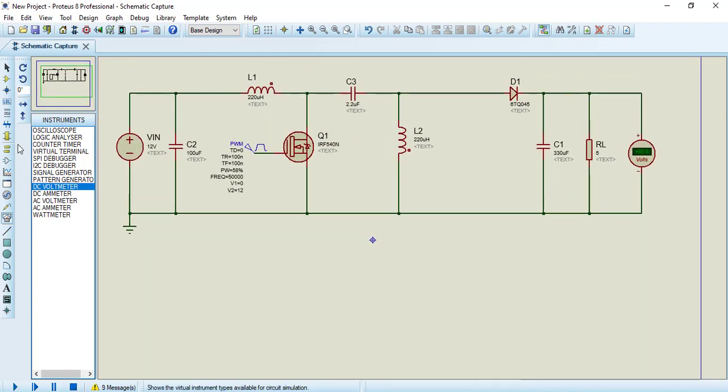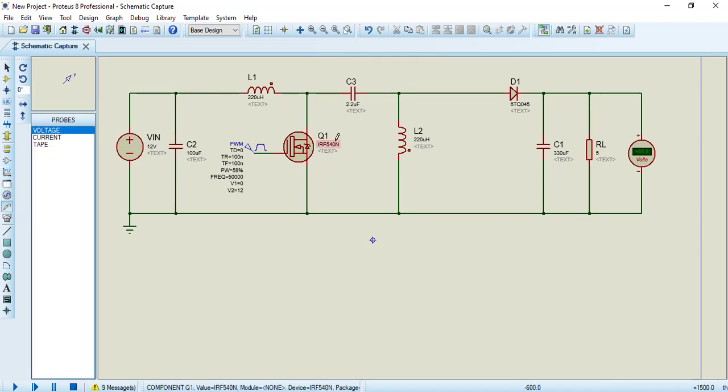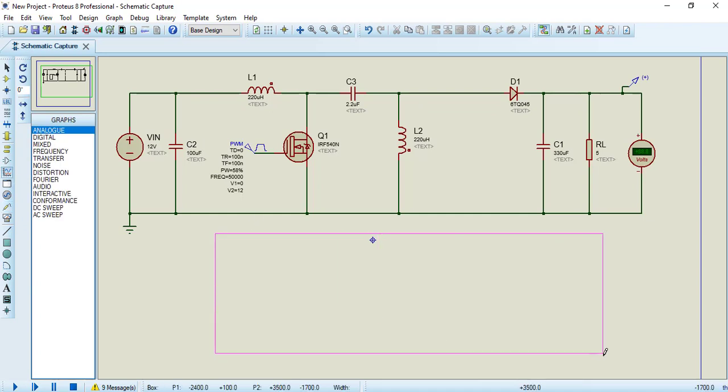We can also see waveform of output voltage in Proteus by using analog graphs. Now let's see output voltage, output current waveforms, using analog graphs. For that we need voltage probe. From sidebar select probe mode, connect output voltage probe on output voltage node.